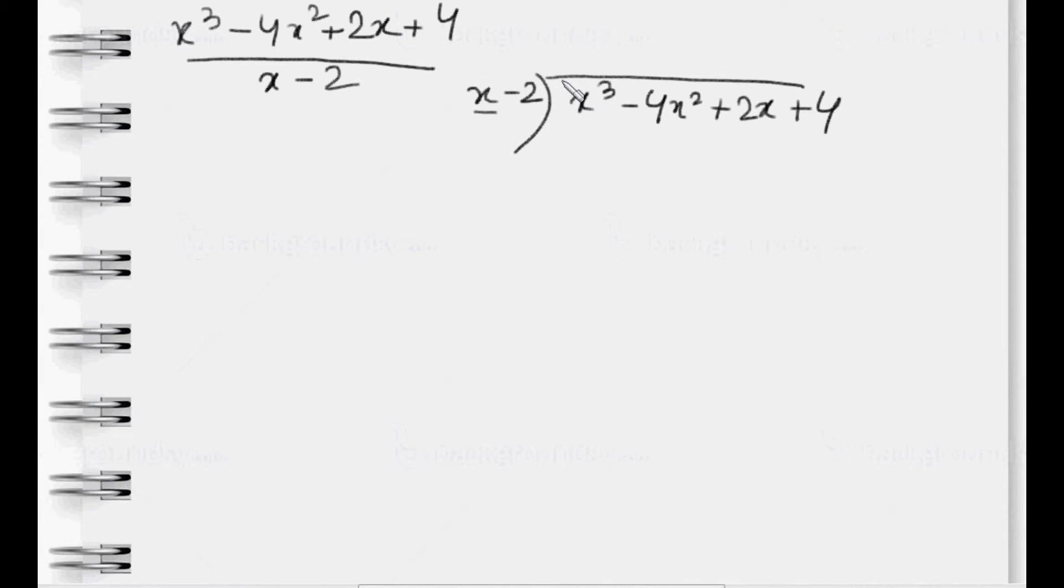So we have to cancel x³ first. You have to figure out how much to multiply with first term of the divisor to make it same as first term of the dividend. How much to multiply with x to make it x³? It's x². Because we have to increase the power by 2. We have to multiply this with whole divisor. -2 into x² is equal to -2x².